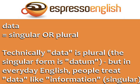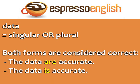One final tip about the word 'data.' Data can be singular or plural. Technically, 'data' is plural — the singular form is 'datum.' But in everyday English, people treat the word 'data' like the word 'information,' which is singular. So both forms are considered correct: 'the data are accurate' and 'the data is accurate.'